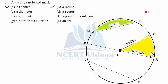A diameter is twice the radius, so RQ or QR is the diameter — C part. A sector is the area made by an arc followed by two radii OP and OQ, so we name it sector POQ. The shaded region in yellow is this sector — D part.